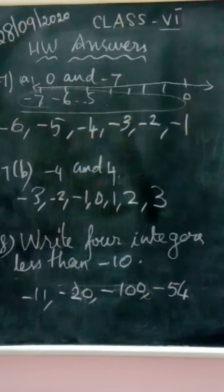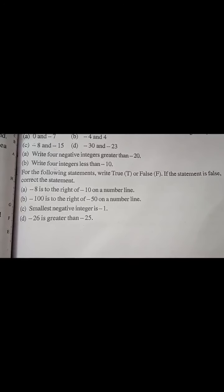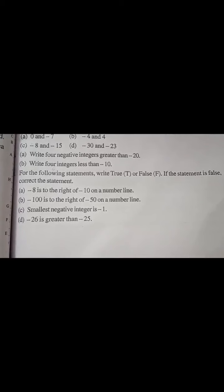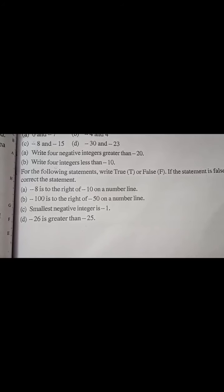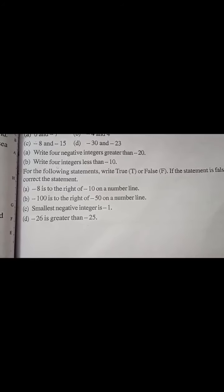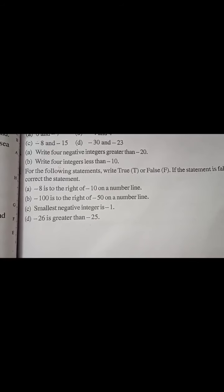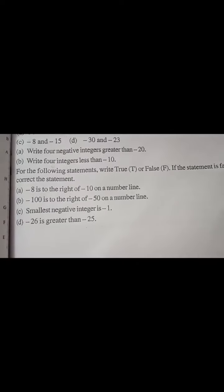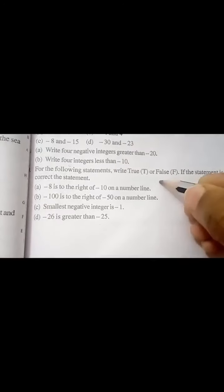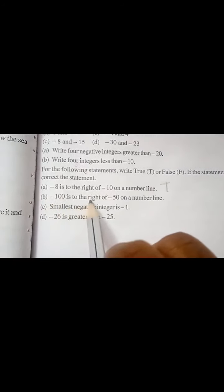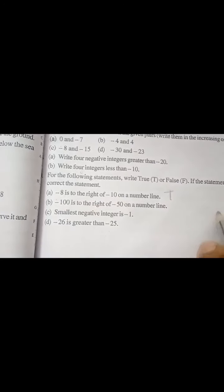Now let us see the ninth question: for the following statements write true or false, and if false correct the statement. The first statement: minus 8 is to the right of minus 10 on the number line — is this true or not? Minus 8 is bigger than minus 10, so minus 8 will be on the right side of minus 10. That is true. Next: minus 100 is to the right of minus 50 on the number line. Minus 50 is bigger than minus 100, so minus 100 is to the left — this is false.